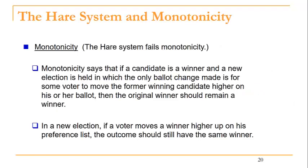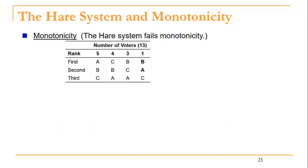What is the drawback of the HAIR system? It fails something called monotonicity. Monotonicity says that if a candidate is a winner and a new election is held in which the only ballot change made is for some voter to move the former winning candidate higher on his or her ballot, then the original winner should remain a winner. If a voter moves a winner higher on their preference list, the outcome should still have the same winner.